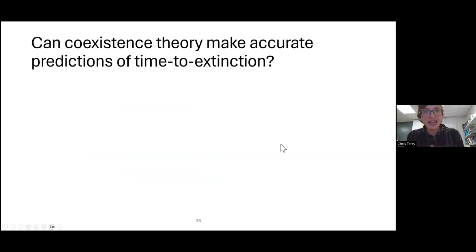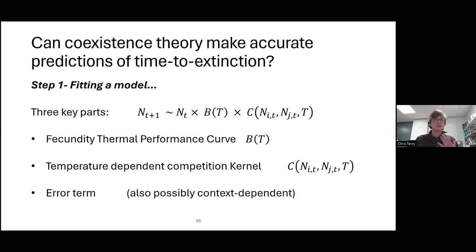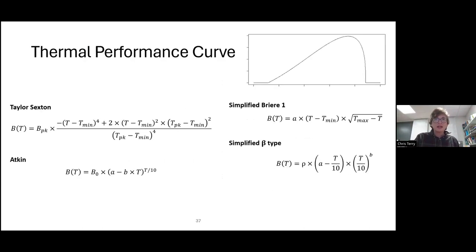So the question is: can coexistence theory make accurate predictions of the time to extinction? To fit the population model, I basically need three parts: a thermal performance function for the base fecundity, a temperature-dependent competition kernel, and some kind of representation of the error. I fit all these parts in a modular way to build up the best model I can.